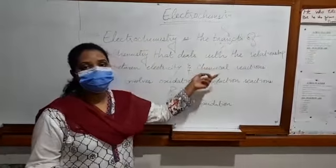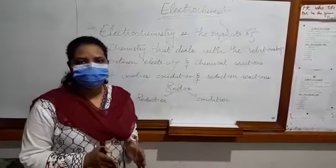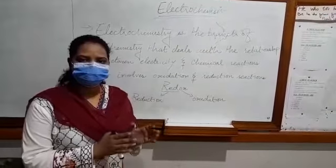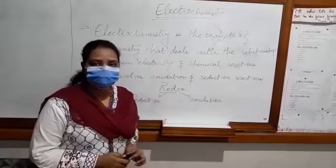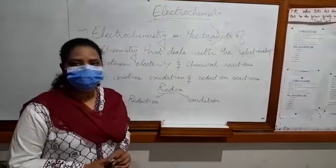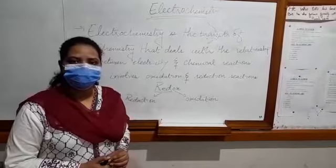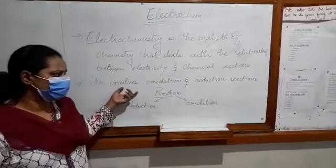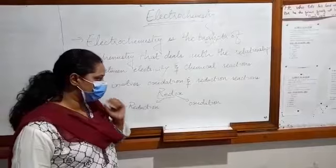Here we deal with two conditions. One is when electricity is produced during a chemical reaction, and in the second case, electricity is used during the process of a chemical reaction. It involves oxidation and reduction reactions.